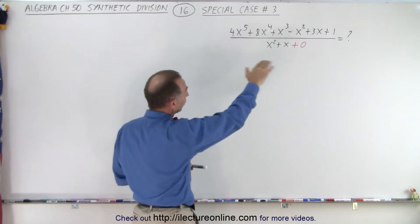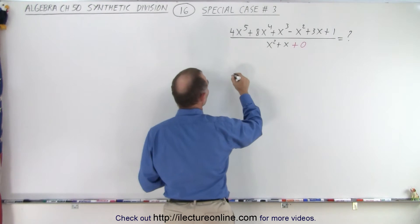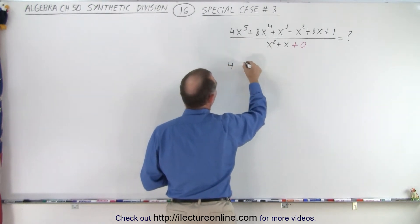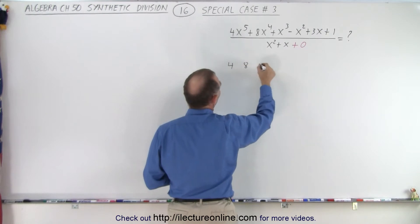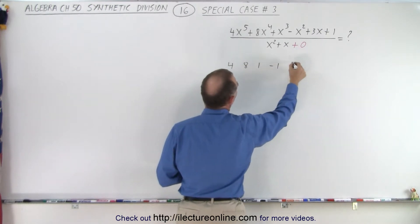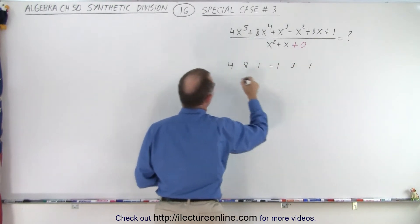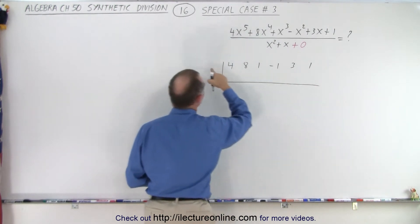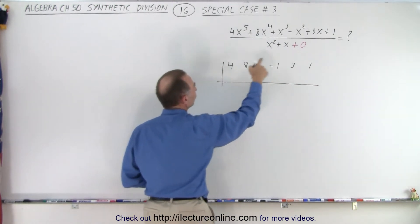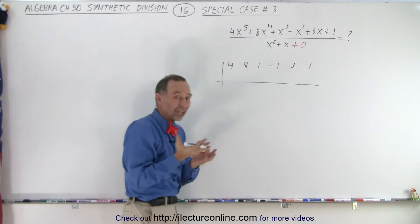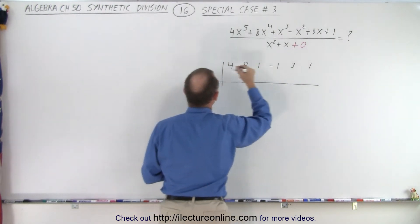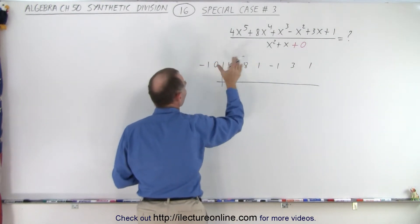First we write down all the coefficients of the numerator. Notice we have a lot of them because we have x to the fifth power. So we have 4, 8, 1, negative 1, 3, and 1. We draw a line this way, we draw a line this way, and then over here we need the two numbers, but the sign changed the coefficients, so this becomes a negative 1 and 0.